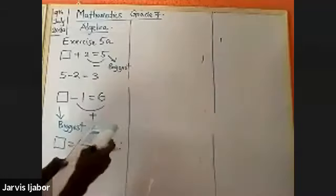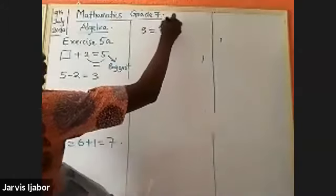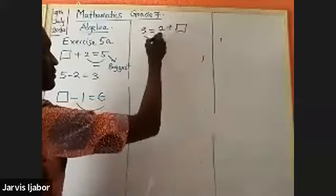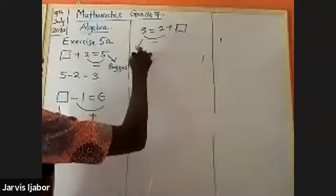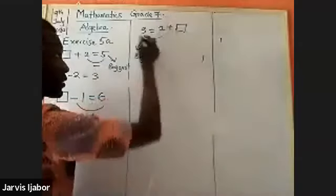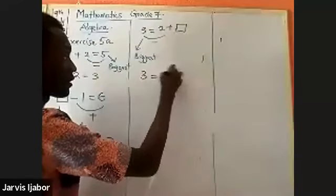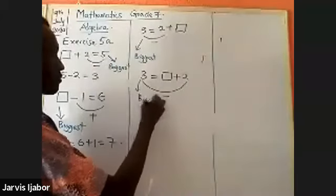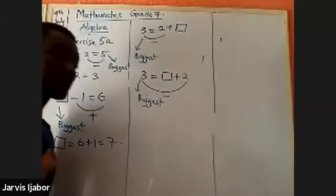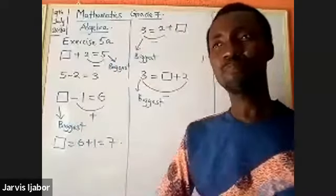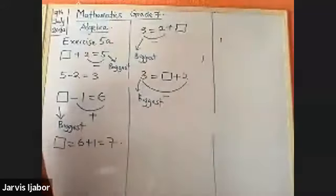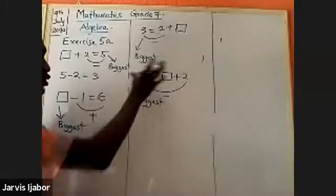If I have three equals two plus box — irrespective of where the box is located, I am subtracting. If you add all things, the answer is always a bigger value. If you are subtracting, the answer will be a lesser value. Write these rules down as I write them on the board.